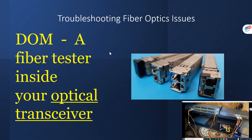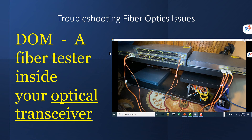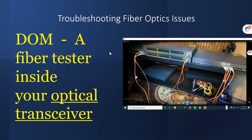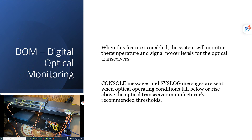In this video, I'm going to show you how to troubleshoot fiber optics issues using a feature called DOM — that is Digital Optical Monitoring. It is actually a fiber tester inside your optic transceiver. There is an inbuilt optical monitoring system in this transceiver. When the DOM feature is enabled, the system will monitor the temperature and signal power level for the optical transceiver. Console and syslog messages are sent when optical operation conditions fall below or rise above the manufacturer's recommended threshold.